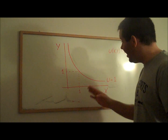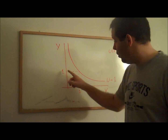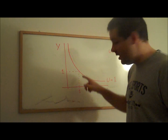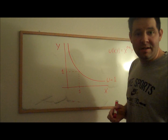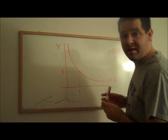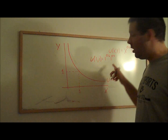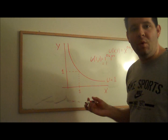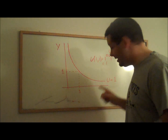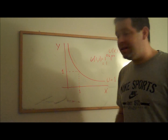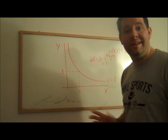One of the points on this u equals 1 indifference curve is y equals 1 and x equals 1. You can see that if you plug x equals 1 and y equals 1 into the utility function, we get 1 — that's a utility of 1. Of course, there are a whole bunch of other points that satisfy this equation where utility equals 1.